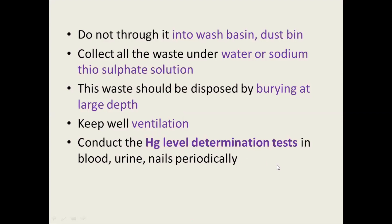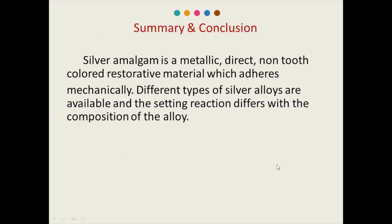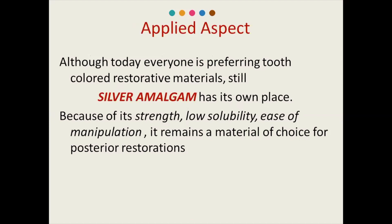Dear students, here we complete the Silver Amalgam chapter. Summarizing: Silver Amalgam is a metallic, direct, non-tooth-colored restorative material which adheres mechanically. Different types of silver alloys are available and the setting reactions differ with the composition of the alloy. Although today everyone is preferring tooth-colored restorative materials, Silver Amalgam still has its own place because of its strength, low solubility, ease of manipulation, and it remains a material of choice for posterior restorations.